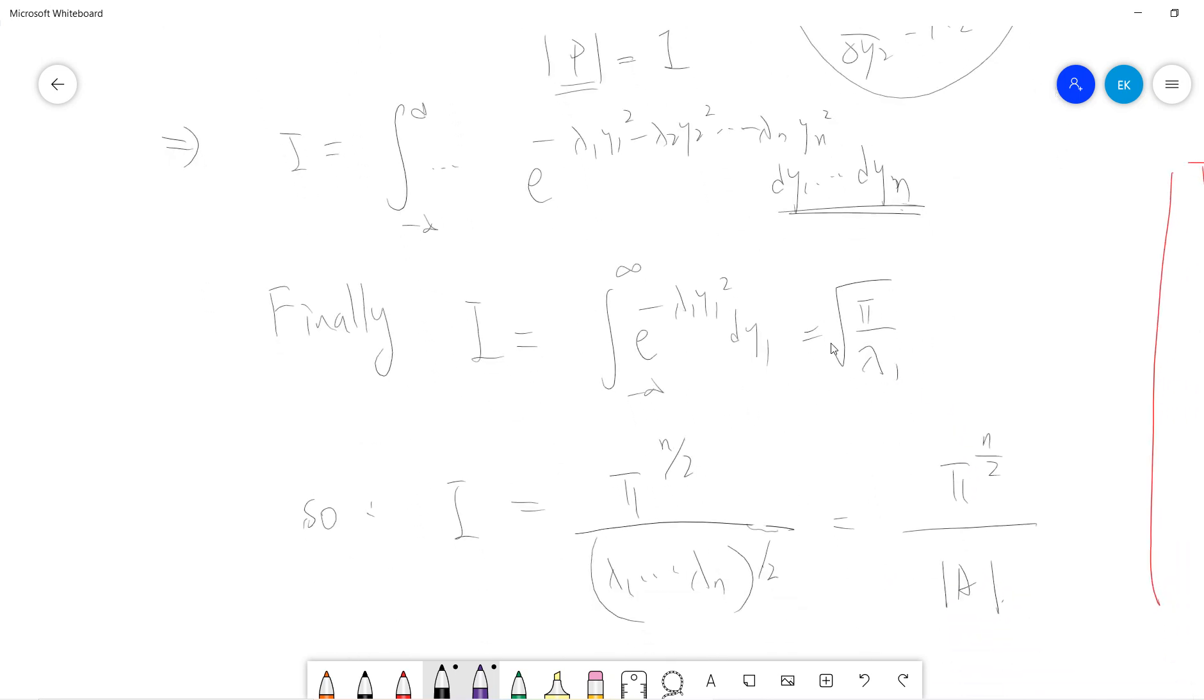You can check my video, I have a lot of videos proving this idea. So now our I will be pi divided by, so we have a square root of pi, and we have n of them, so it's pi to n divided by 2, and lambda 1 up to lambda n, take a square root. And what is the product of all eigenvalues? Just the determinant of A. So we prove this.